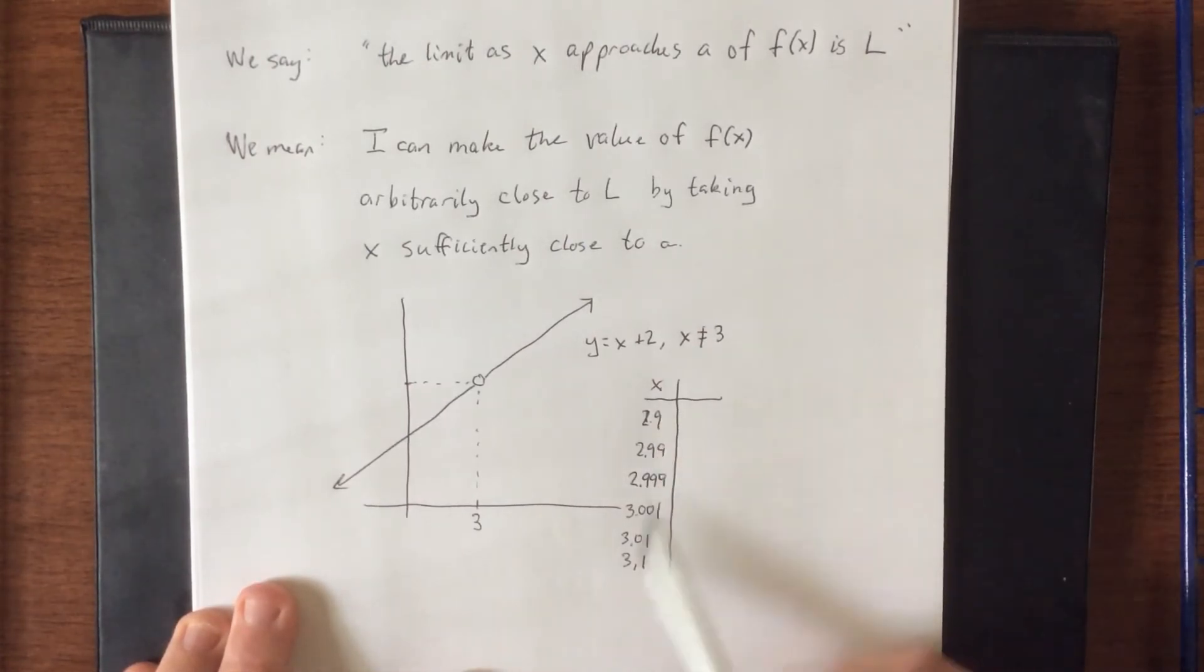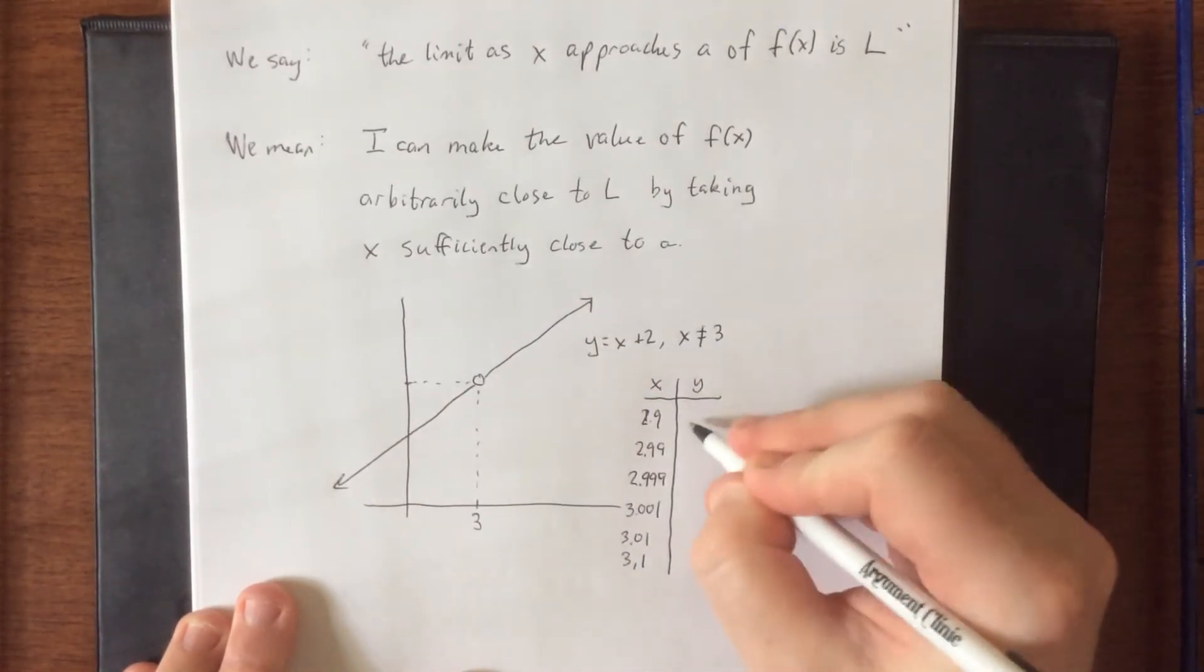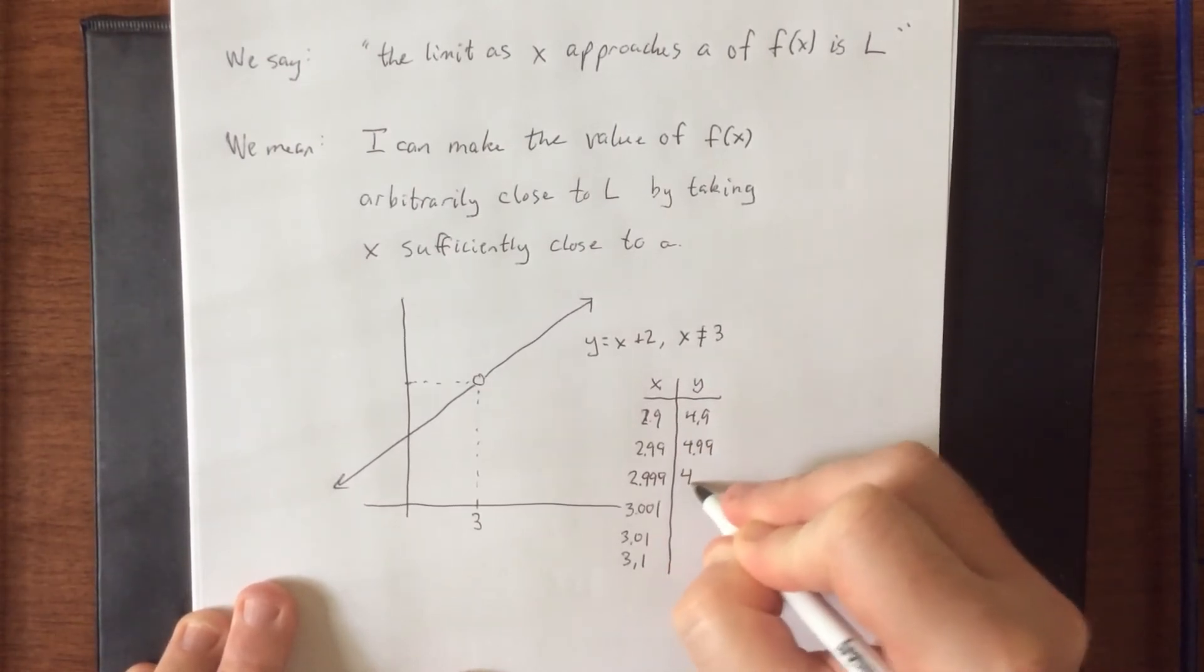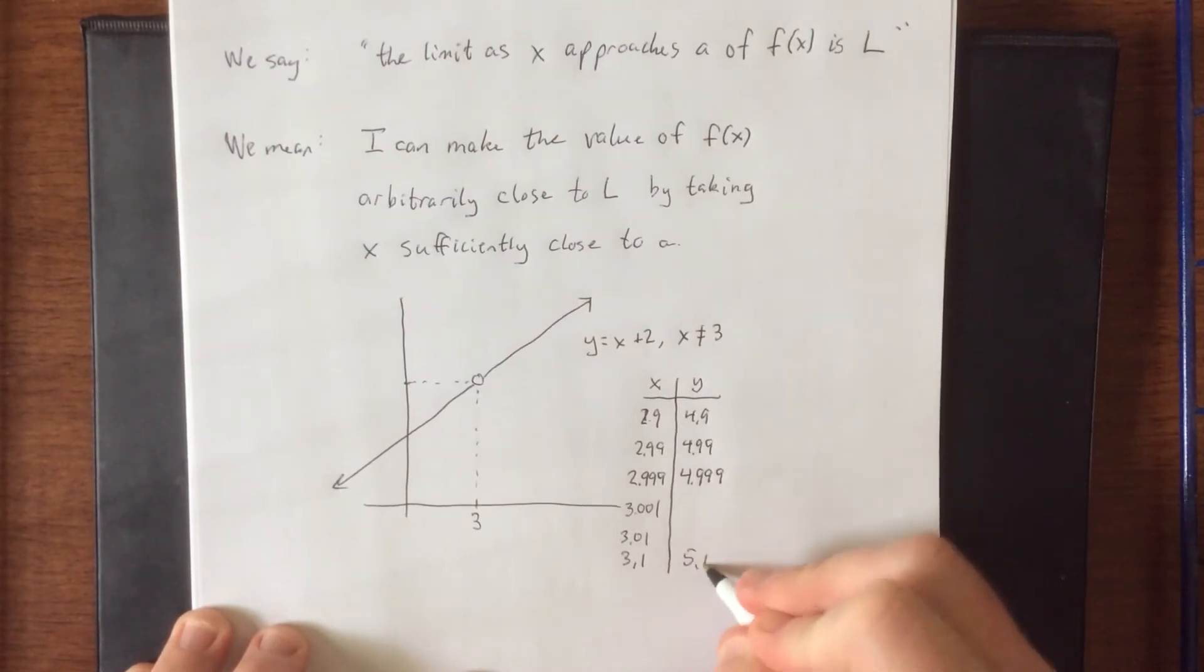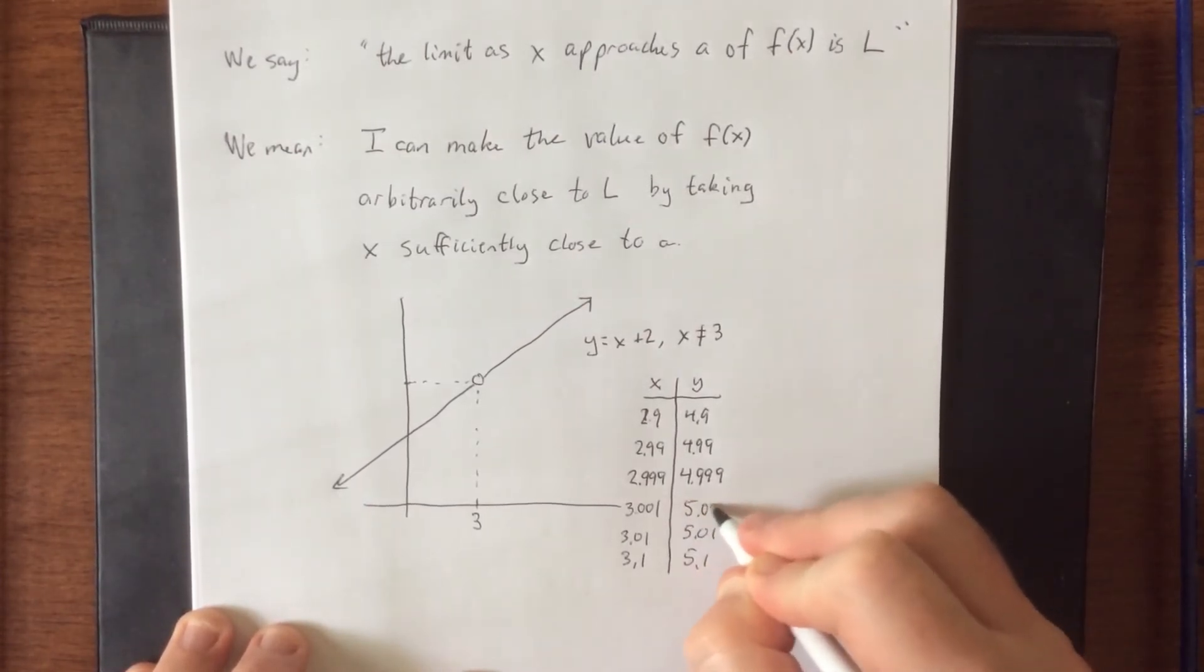So if I do plug in any of these values, I simply add 2 to the result to get the corresponding value of Y: 4.9, 4.99, 4.999 or from the other direction, 5.1, 5.01, 5.001.